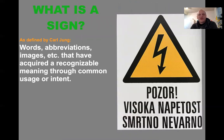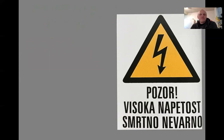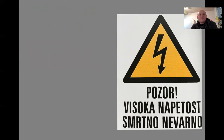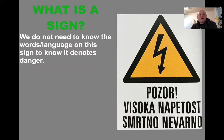Words, abbreviations, images, etc., have acquired recognizable meaning through common usage or intent. Signs and signals do no more than denote the object to which they are assigned by genetics, instinct, or conditioning to elicit a stereotyped response. We do not need to know the words or language on a sign to know it denotes danger, because we're conditioned to that symbol.